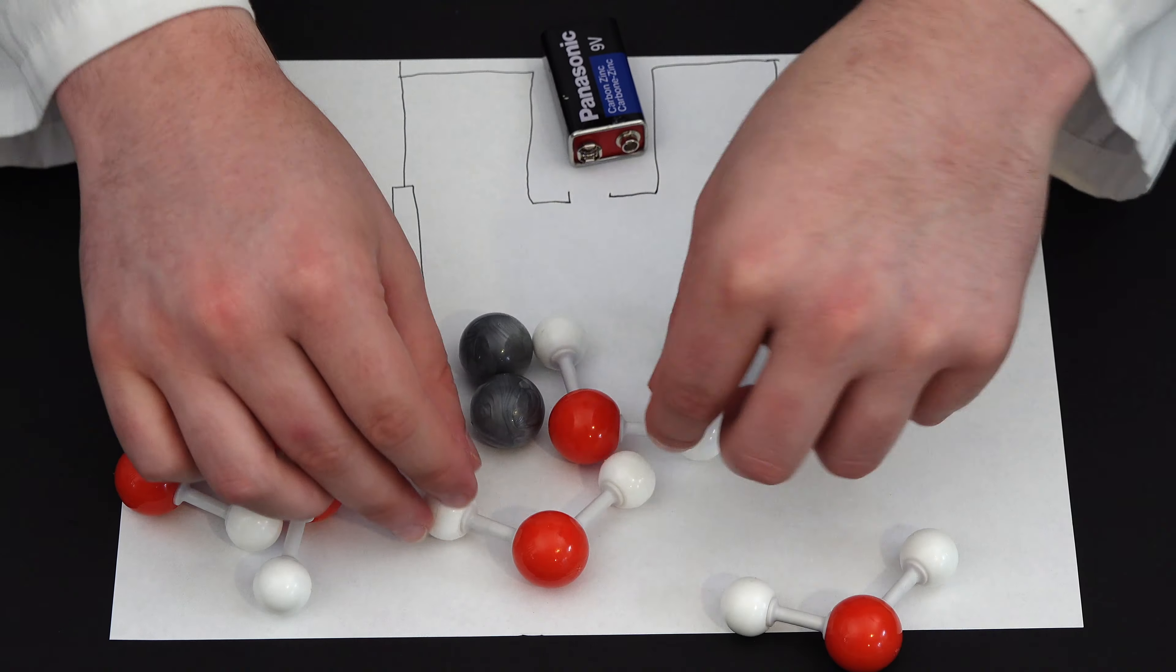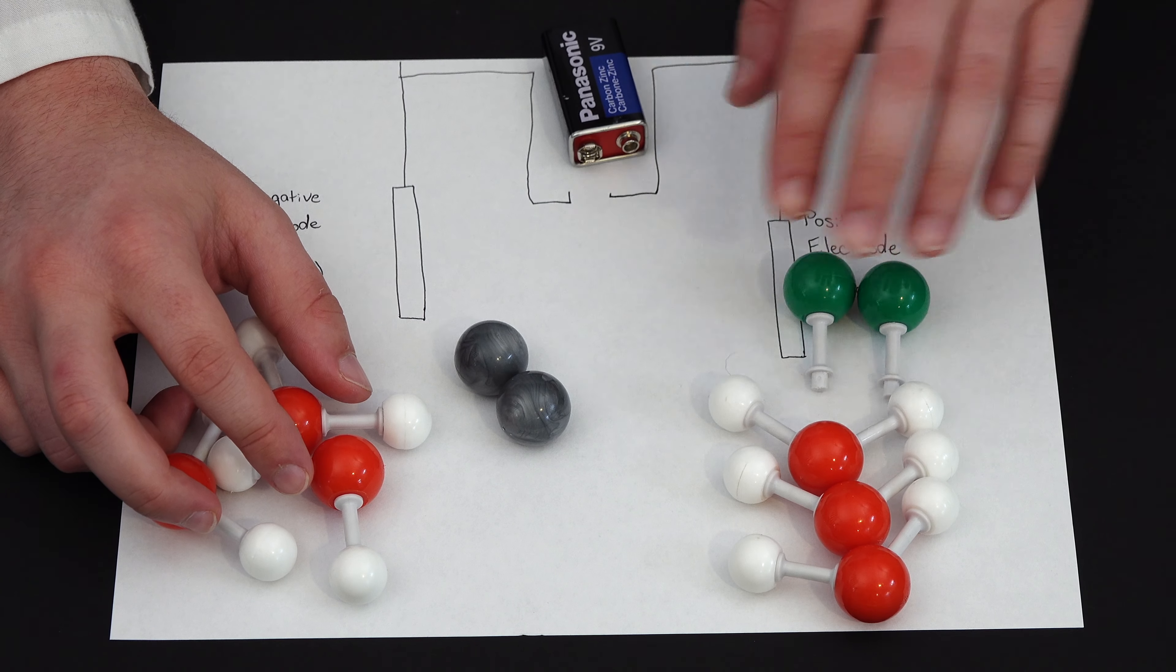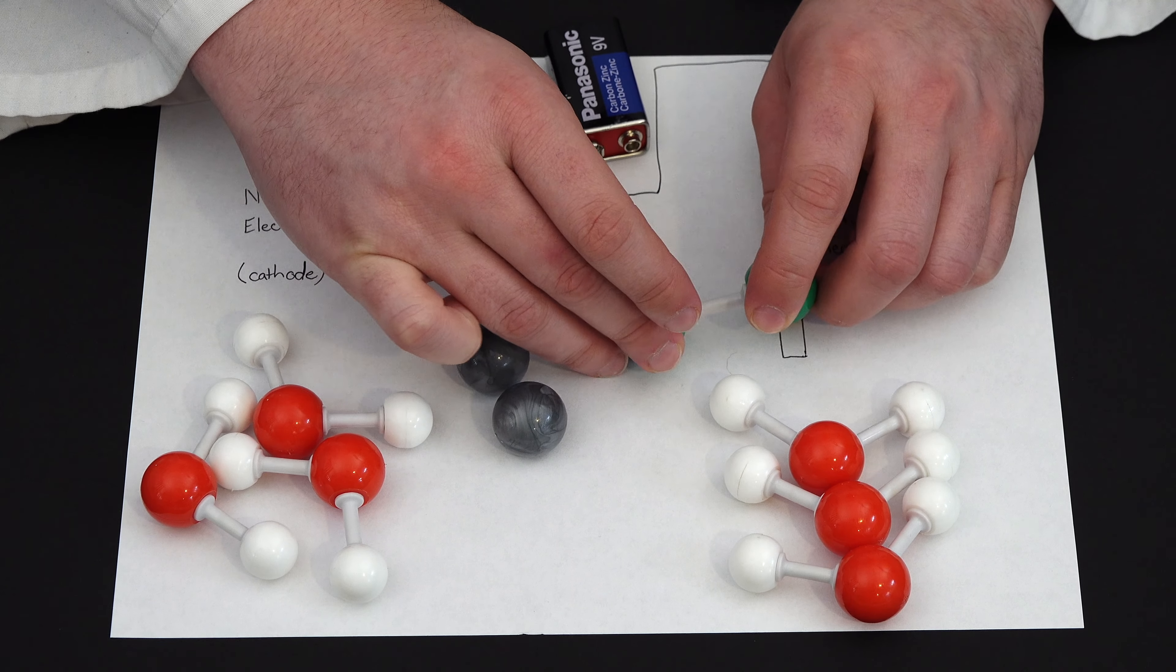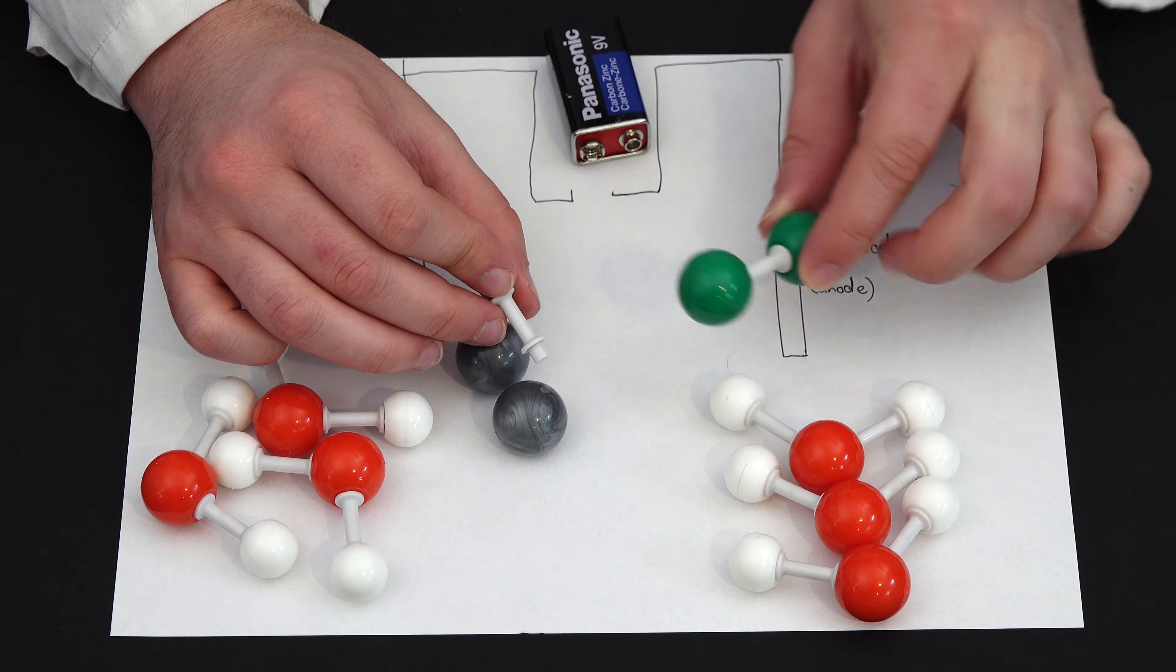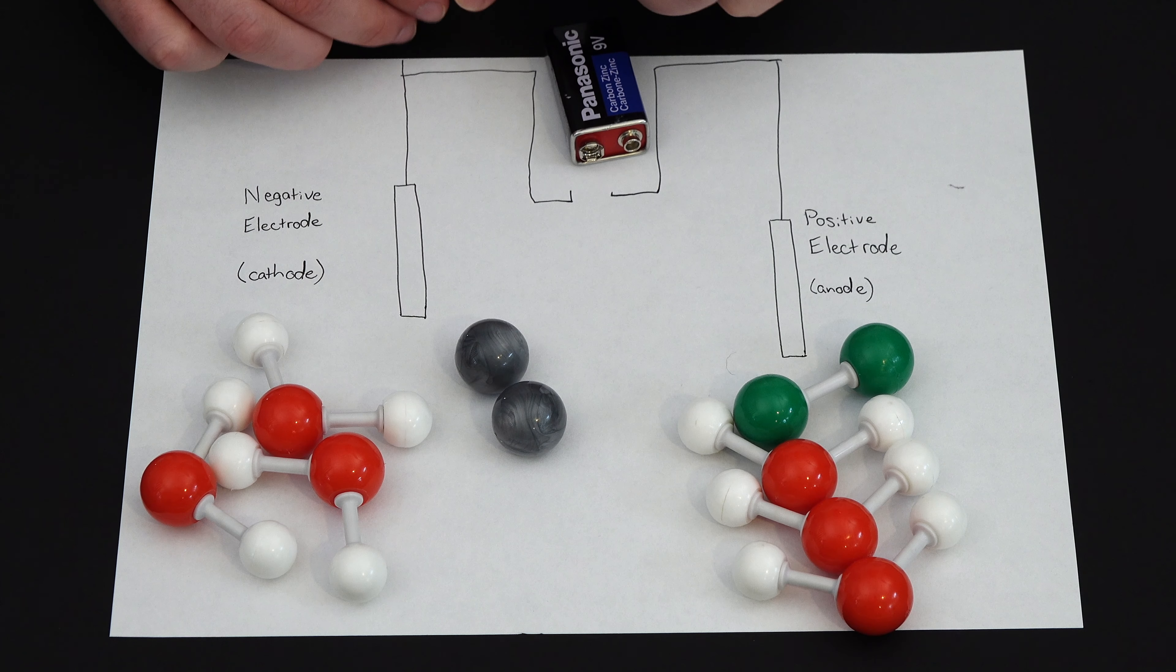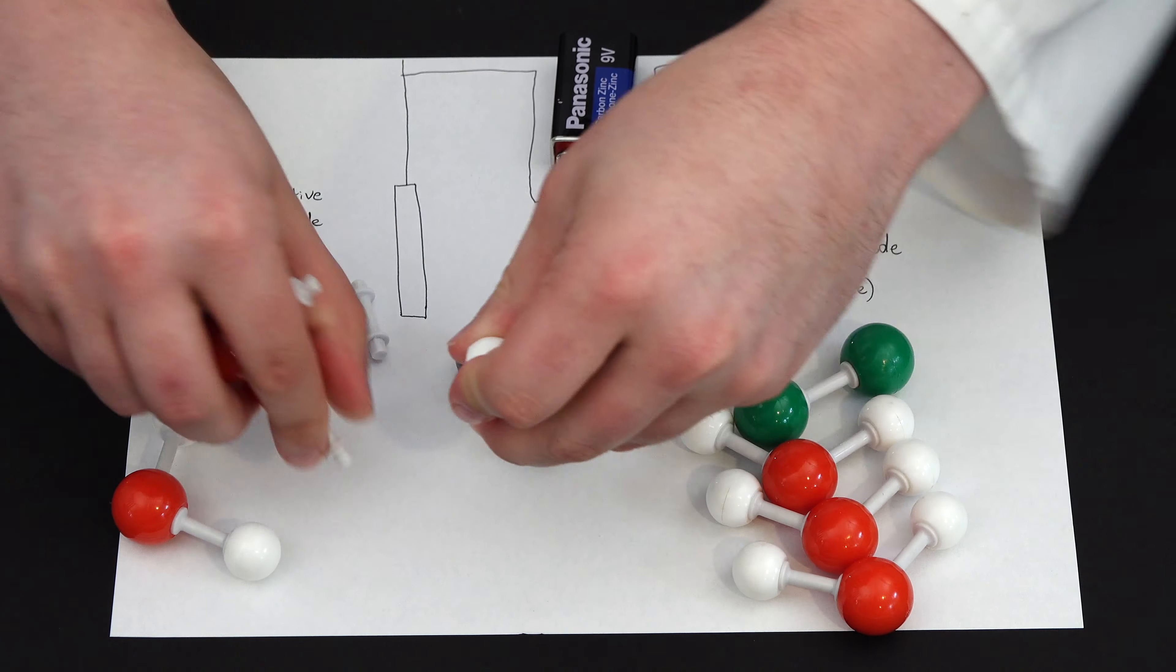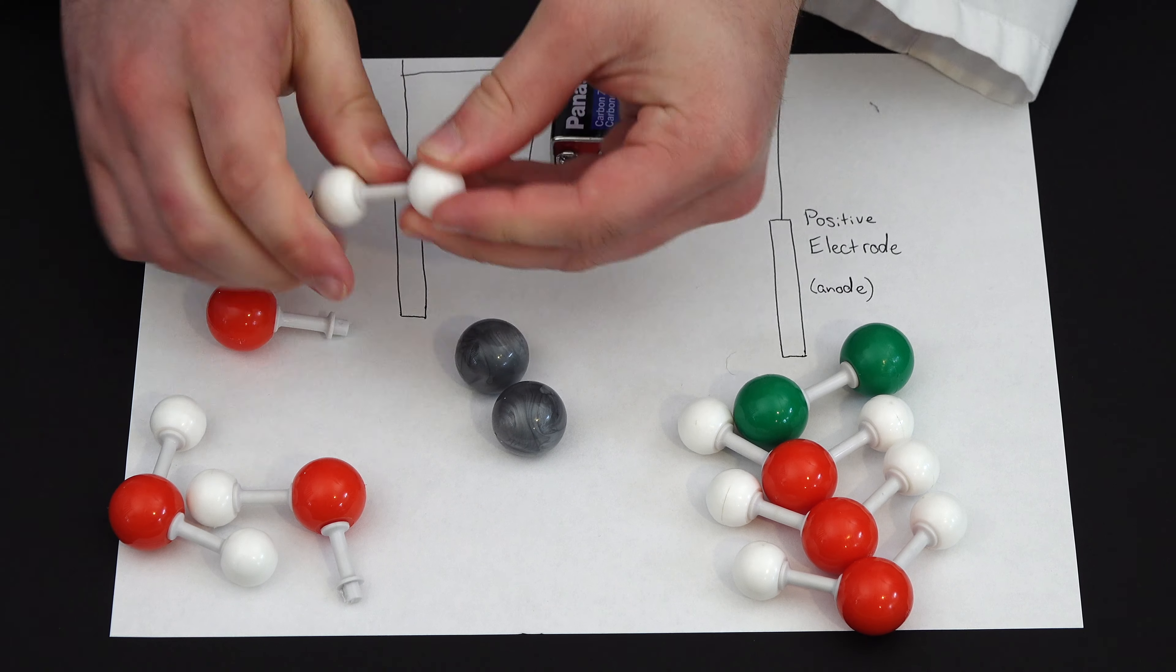So we're going to do the same process as before. So over on our positive electrode, we have some water and some chloride. So two electrons are going to be removed from two chloride ions. The chloride ions will join together to form chlorine gas, Cl2. We send two electrons up our wire. So two electrons come down our negative terminal. We pop two hydrogens off.